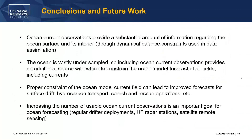This is our first result from that work — a project with DARPA called Ocean of Things, where a number of drifters were released in the northern Gulf of Mexico. The top panels show the analysis with no assimilation of velocities; the bottom is with velocity assimilation. Without velocity assimilation, the eddy is misplaced to the northeast. When we include velocity assimilation through the 3DVAR, we reposition the eddy appropriately, and everything matches up quite nicely with the drifter trajectories. Conclusions: ocean current observations provide a substantial amount of information regarding the ocean surface and its interior. The ocean is vastly under-sampled, and increasing the number of usable ocean current observations is a vital goal for ocean forecasting, certainly for the Navy.